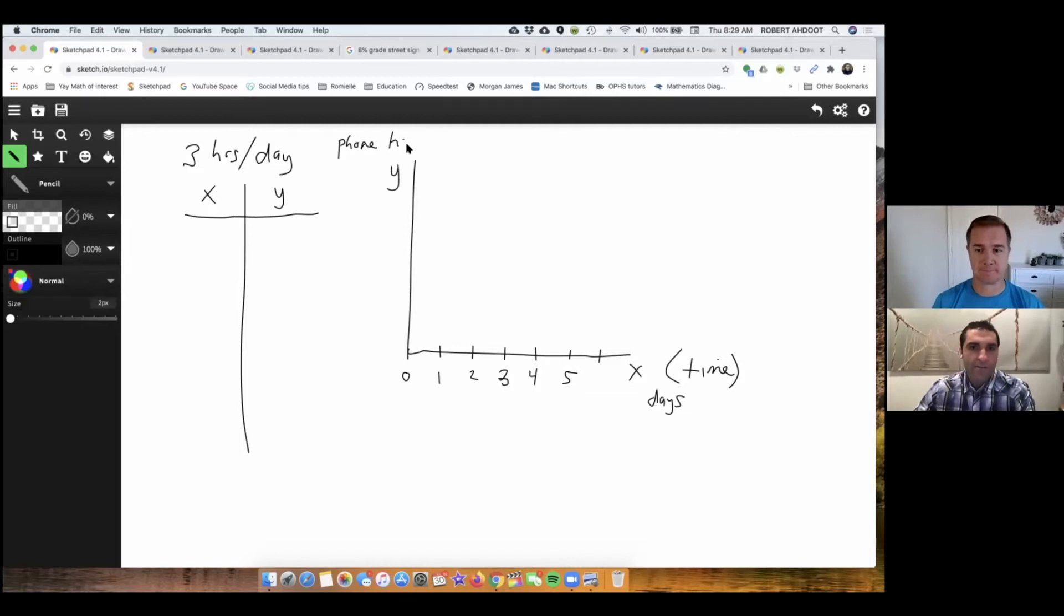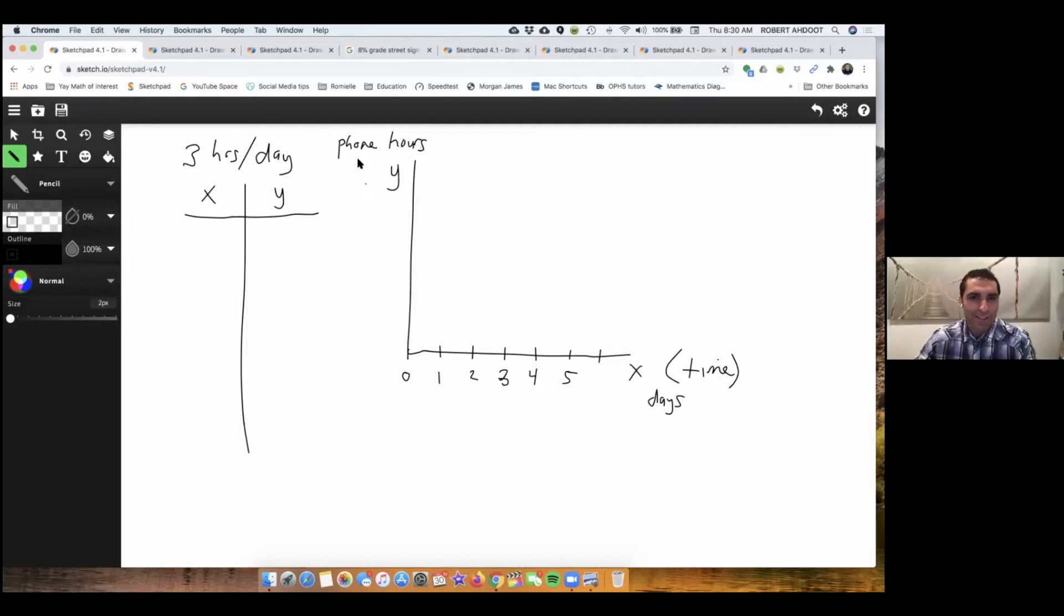If we're talking about three hours every day, we could start talking about our days in very simple terms: one, two, three, four, five days. The first day is three hours, and then each one, as we know, we're just adding three more hours and three more hours and three more hours.